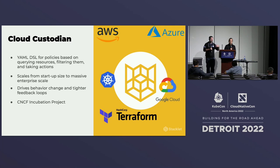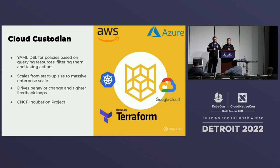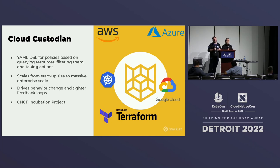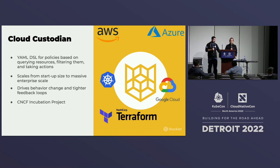Before I landed on Cloud Custodian, I was running many different policy agents — something for Kubernetes, something for AWS, something for Terraform. When you're doing that across all these different things, you start getting a different experience between each one. You might be preventing some SOC 2 stuff on AWS, but you're not preventing it on the Terraform layer. Cloud Custodian opened all that up.